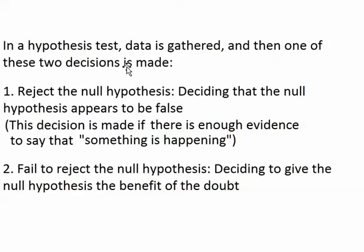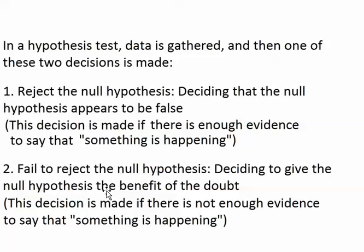If I decided that I do have a cold, then I've rejected the null hypothesis — I've decided that something is happening and rejected the possibility of no cold. If I just assume that I don't have a cold and that nothing is happening, I've failed to reject the null hypothesis, meaning I've decided to give it the benefit of the doubt. This is what's done when there's not enough evidence to say that something is happening. If you do have enough evidence, you reject the null; if you don't, you fail to reject.